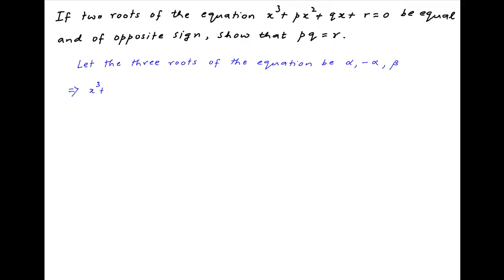Therefore, x cube plus px square plus qx plus r can be expressed as x minus alpha times x plus alpha times x minus beta.